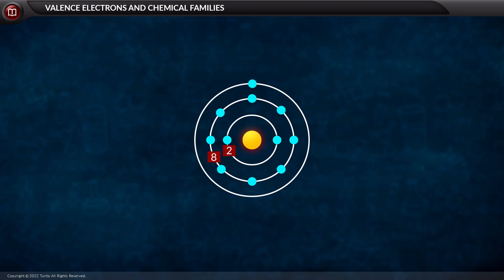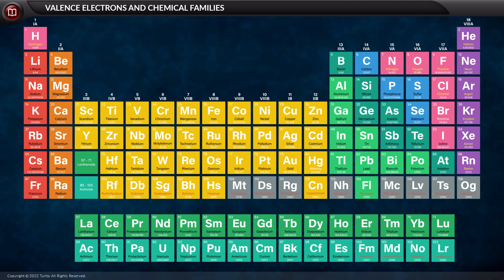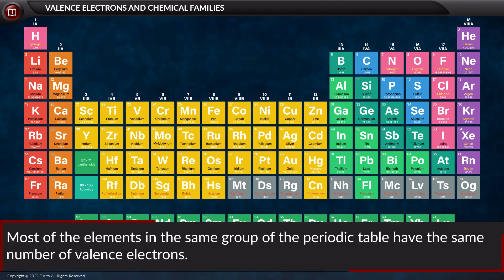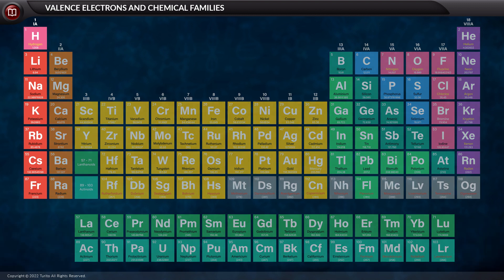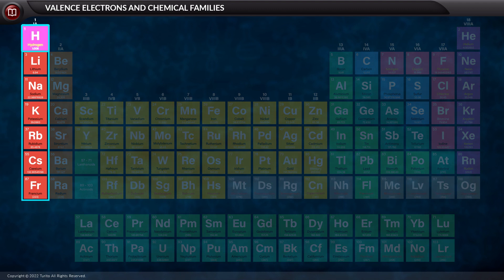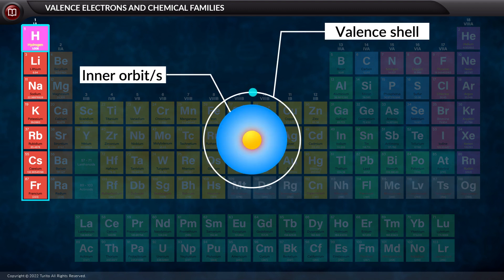Do you want to learn about the similarity of the elements that are present in the same group? Most of the elements in the same group of the periodic table have the same number of valence electrons. Thus, the alkali metals and the hydrogen placed on its top have one electron in the valence shell.